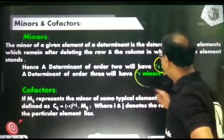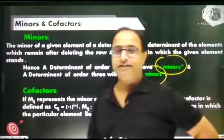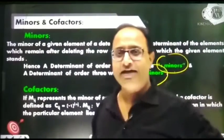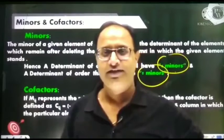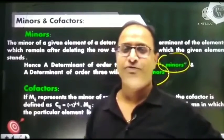A determinant of order 3 has 9 minors. I mean, how many minors are there? Sometimes you can ask a certain type of question about this.